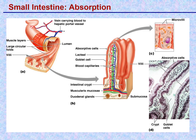In the small intestine, food undergoes further processing so that the main biomolecules — carbohydrates, proteins, nucleic acids, and lipids — can be broken down further so that they can be absorbed. The wall is the place where absorption occurs, and therefore the larger the surface area, the more absorption can happen.